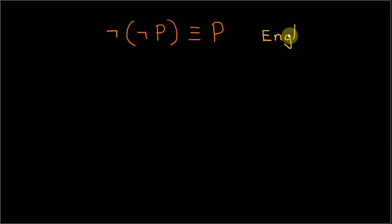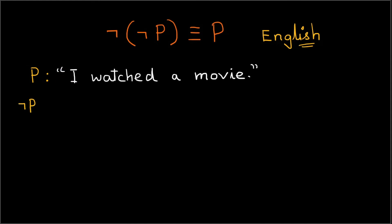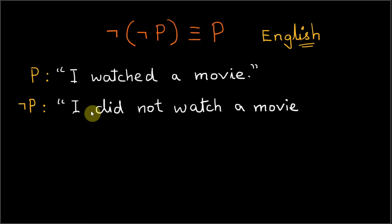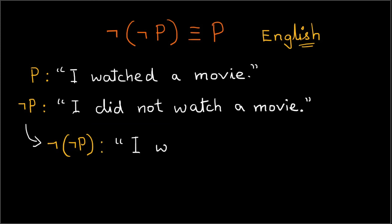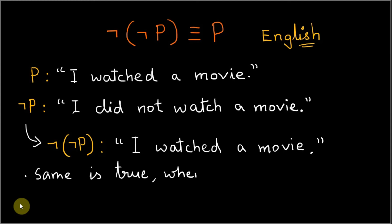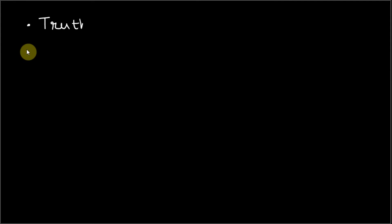We now translate double negation into English. Let P be the statement "I watched a movie." If P is a true statement, then negation of P is "I did not watch a movie," and another negation will bring it back to the original statement: "I watched the movie." The same is true when P is false. Therefore, double negation is a valid logical equivalence.